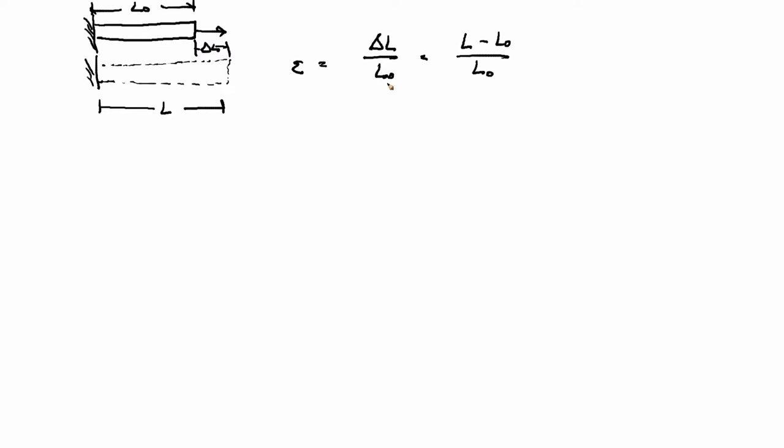So you can see the strain, as we define it here, is some type of normalization, right? We have the change in length, and we normalize it by the original length. Why? Why do we normalize it by the original length?